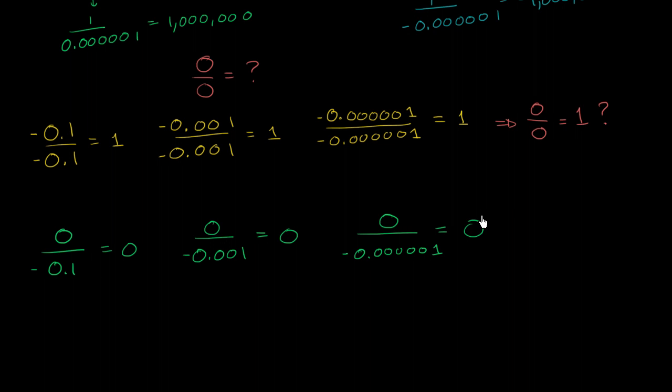So this line of reasoning tells you that it's completely legitimate, or to think at least, that maybe 0 divided by 0 could be equal to 0. And these are equally valid arguments.